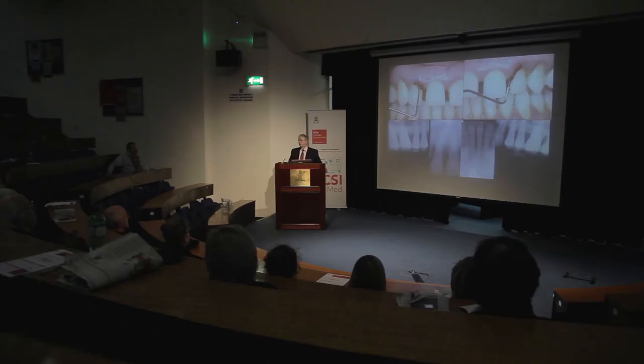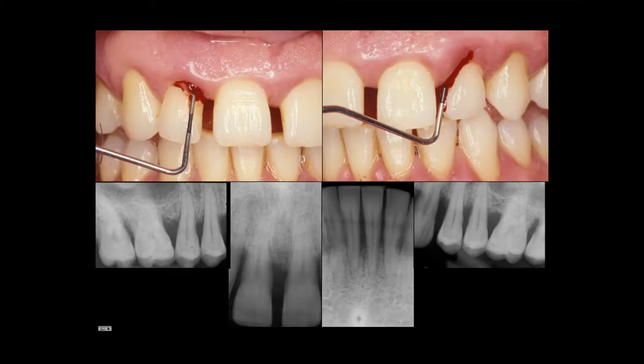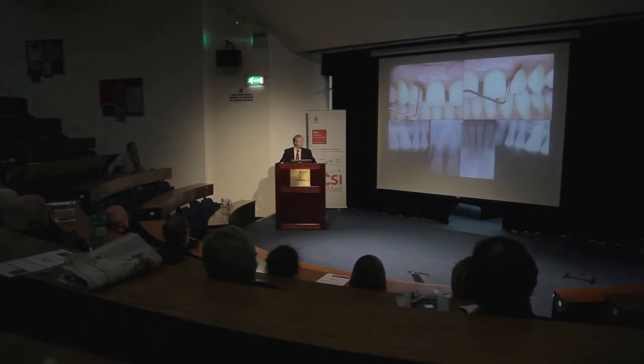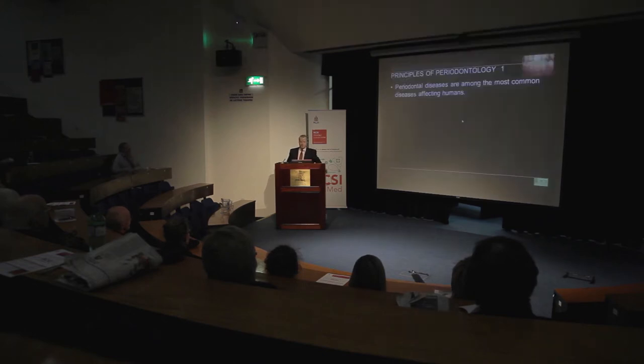Here we have a 44-year-old gentleman with severe periodontal problems, except he didn't realize he had them. That's very often the case with periodontal disease — patients are relatively unaware of the problems they have. They may be aware of bleeding gums or receding gums, but they may be largely unaware of the severe bone loss visible on x-rays, because the bone should be up in the coronal region and you can see where it's been lost.